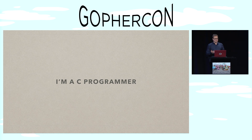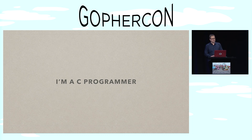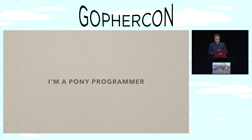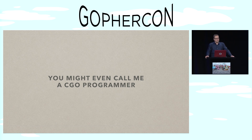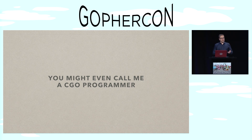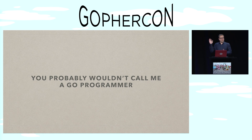I would call myself a C programmer. When I stop and think about computing problems, I think about how is this laid out in memory, how am I going to point at that memory. A lot of my expectations for how computer languages should work are really based on how C works. And early on, a lot of my expectations for C were based on the fact that I first started learning as a Forth programmer. I'm also a Pony programmer — most folks don't know what Pony is. It's a high-performance actor-based language designed to make it easy to do unsafe things safely. You could probably call me a CGo programmer at this point. I've spent more time studying the Go runtime and how CGo works than I have actually writing Go code itself.